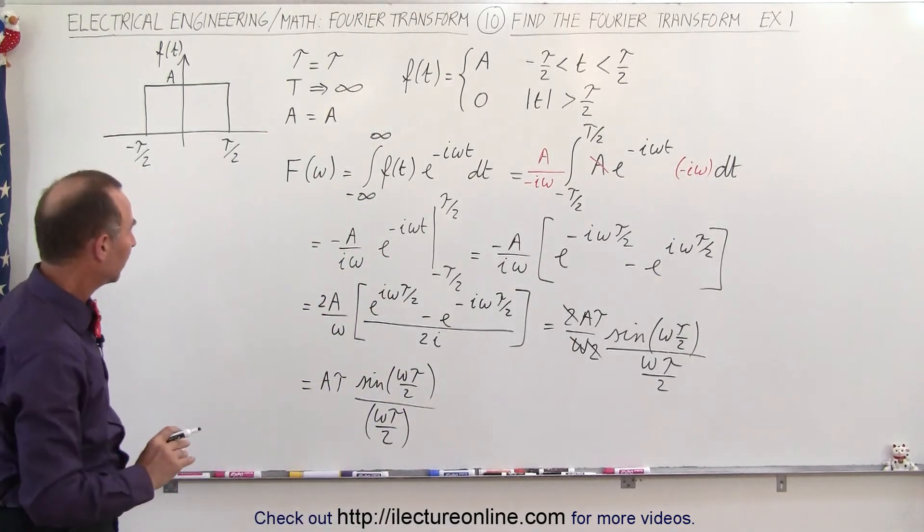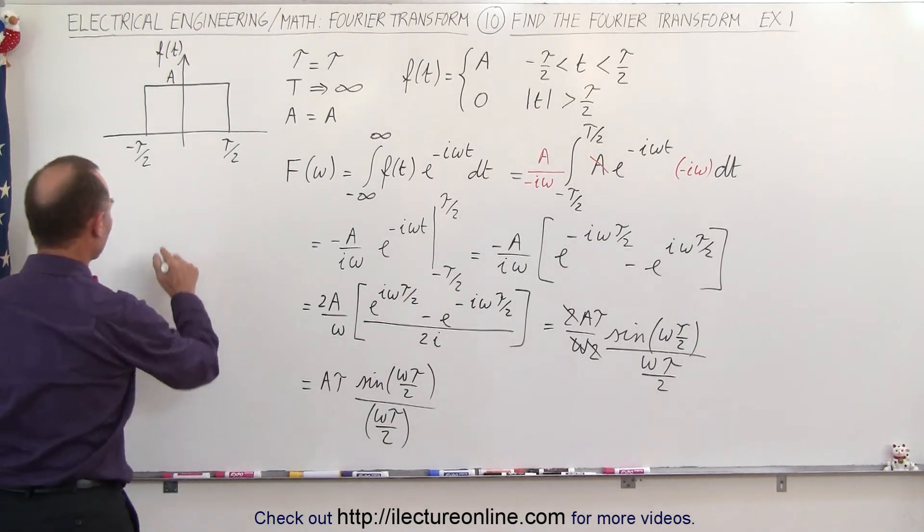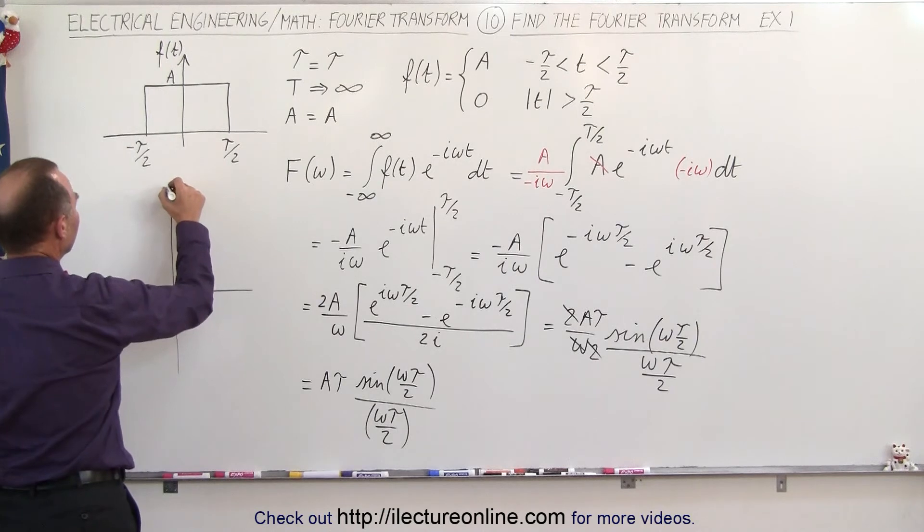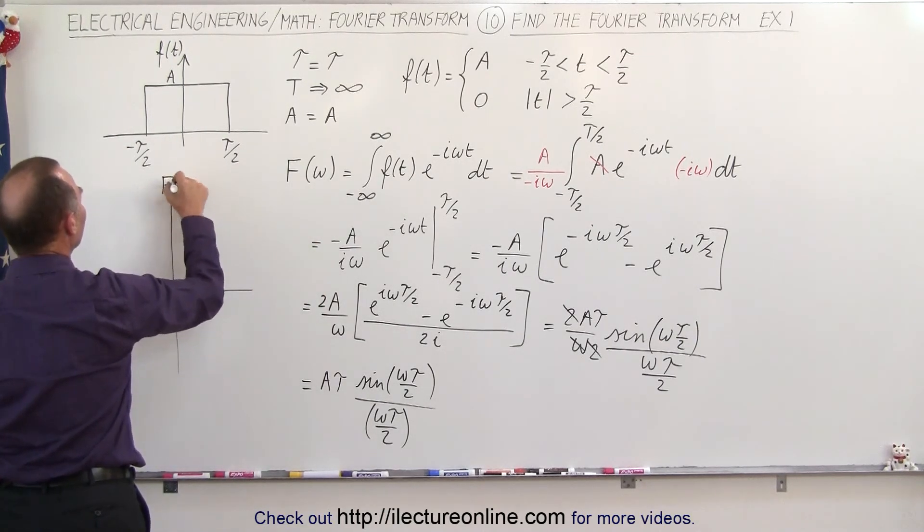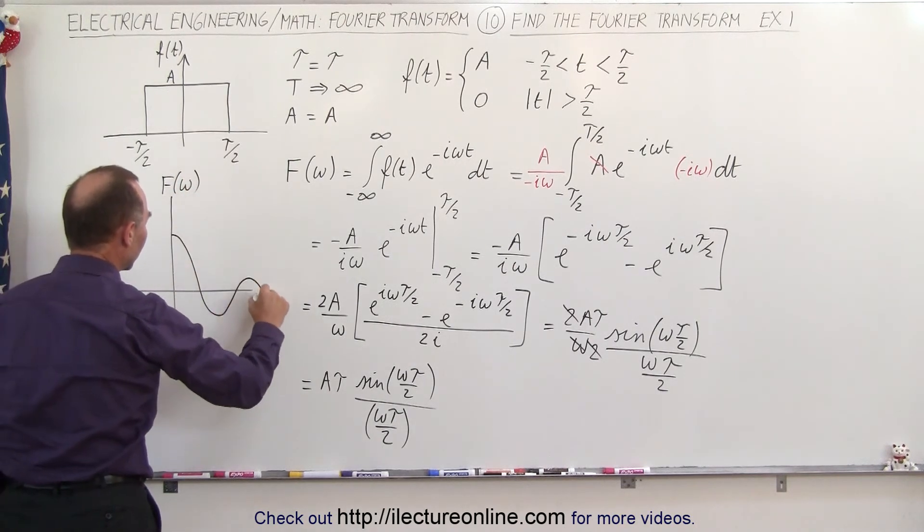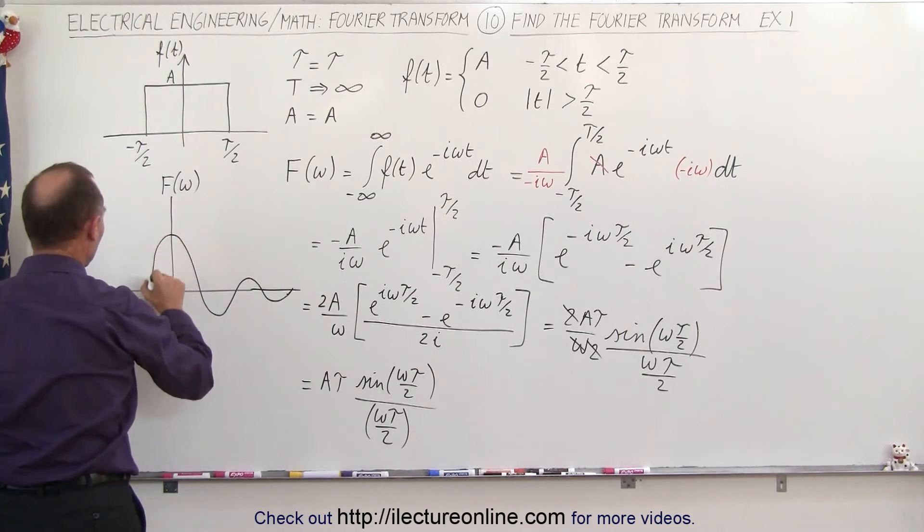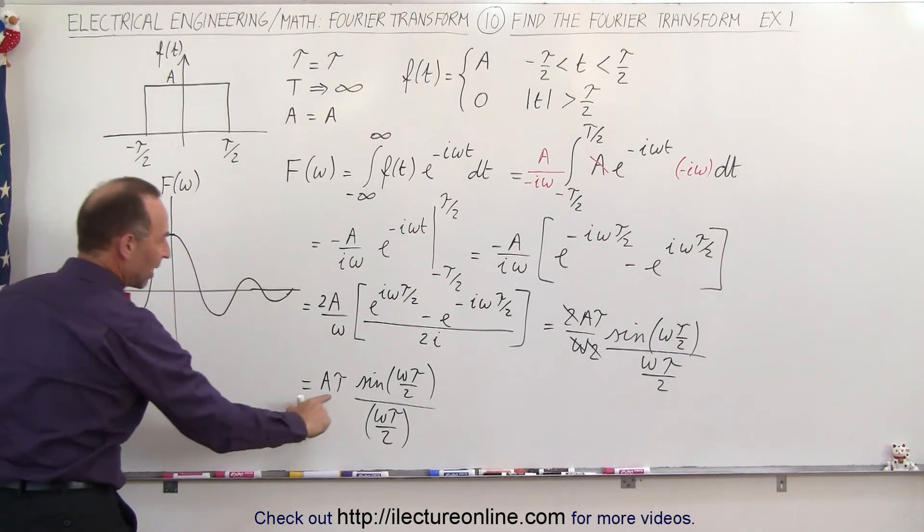And I want to grab that function—maybe I'll grab it right over here—so if I grab the function it will look like this. This here would be the transformed function, that would be F as a function of omega, and then I will have a sinc function that will look like this. And of course that sinc function will go in both directions like that.